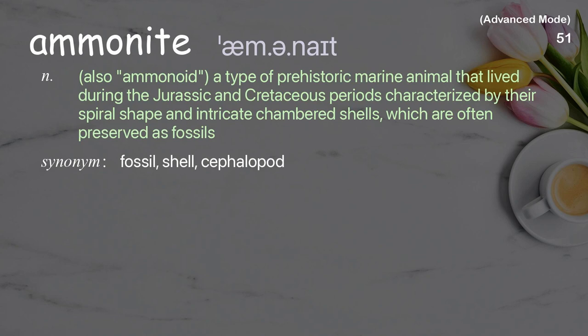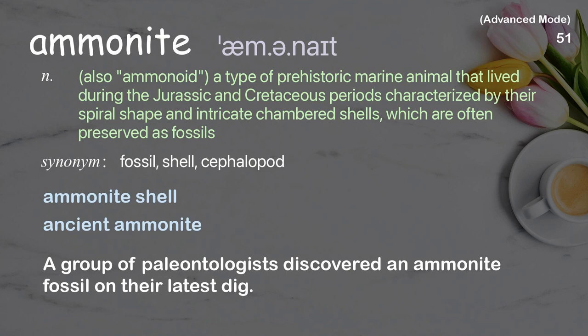Ammonite (also ammonoid): A type of prehistoric marine animal that lived during the Jurassic and Cretaceous periods, characterized by their spiral shape and intricate chambered shells, which are often preserved as fossils. Examples: Ammonite shell, Ancient ammonite. A group of paleontologists discovered an ammonite fossil on their latest dig.